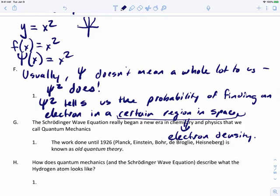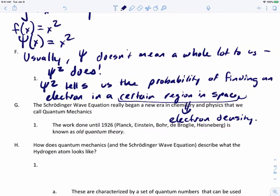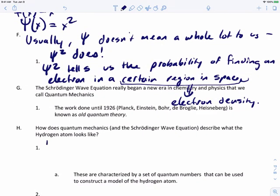The Schrödinger wave equation really began a new era of chemistry and physics that we now call quantum mechanics. The work done prior to 1926 is known as old quantum theory. How does quantum mechanics, using the Schrödinger wave equation, describe how the hydrogen atom looks?